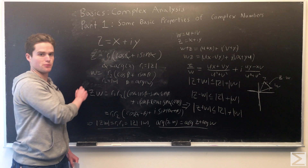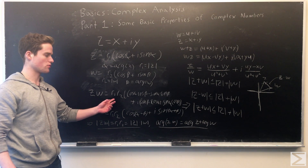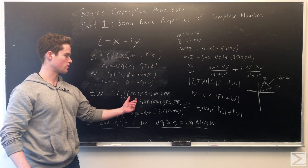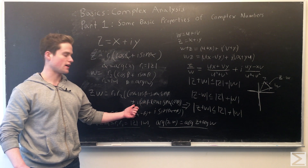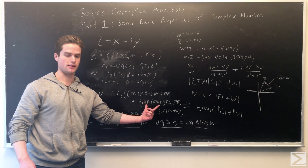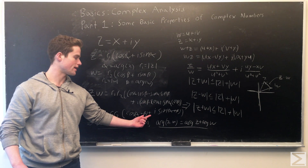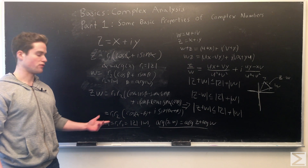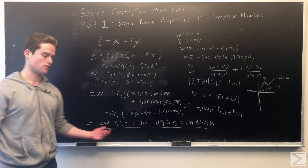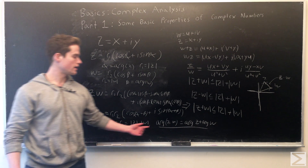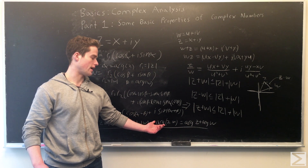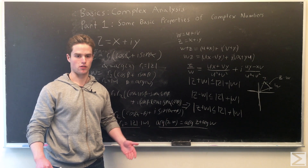Writing two arbitrary complex numbers in their polar forms and multiplying them together, we get z times w equals r1 times r2, where r1 and r2 are their respective moduli. Multiplying everything out and distributing, we get cosine alpha cosine beta minus sine alpha sine beta plus i times (sine beta cosine alpha plus cosine beta sine alpha). Using well-known trigonometric identities, we can condense this into cosine(alpha plus beta) plus i sine(alpha plus beta). So the modulus of z times w is r1 times r2, which is modulus z times modulus w — the modulus distributes over multiplication. Also, the argument of z times w is alpha plus beta, which is argument z plus argument w.